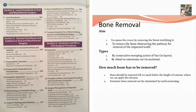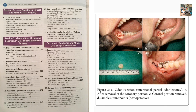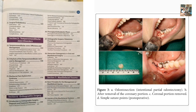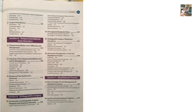The bone removal technique is called root sectioning, tooth splitting, and root odontectomy. The indications and contraindications of these techniques are very important — they will be asked in the exam and in the viva.